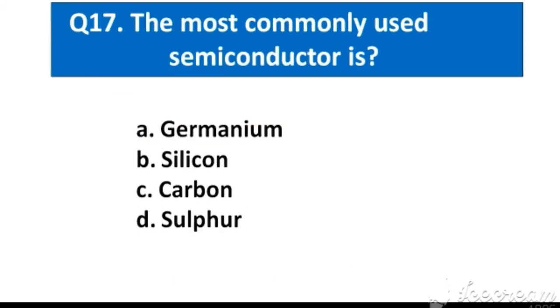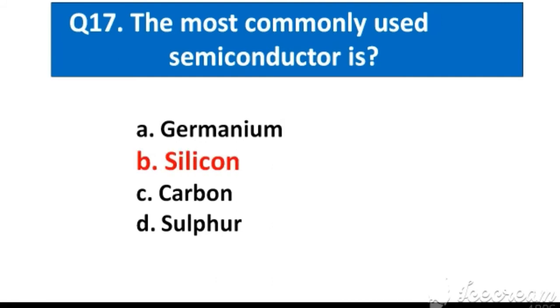Question number 17. The most commonly used semiconductor is option A. Germanium, B. Silicon, C. Carbon, D. Sulphur. The right answer option B. Silicon.